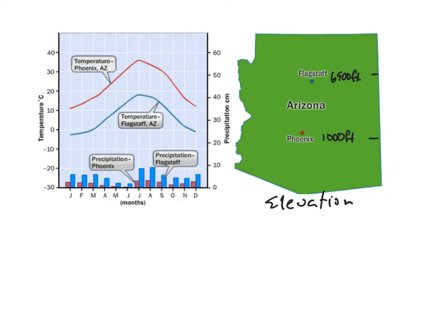With that elevation change being cooler, we would expect temperatures in Flagstaff to be cooler than temperatures in Phoenix, and that's what we see on our graph here where Phoenix temperatures are shown in red and Flagstaff is shown in blue.